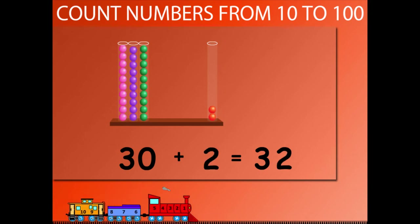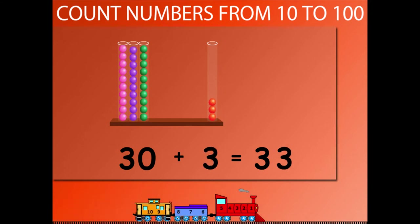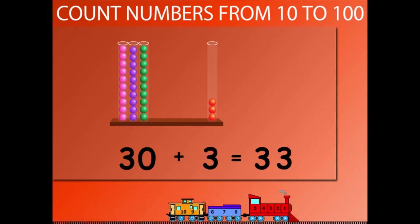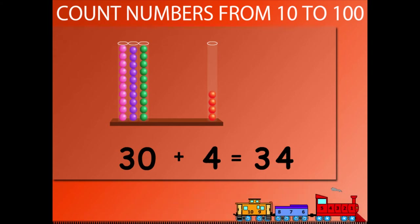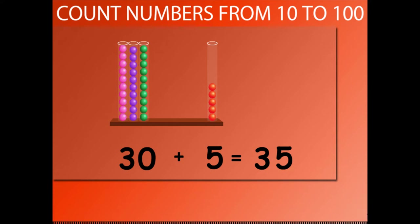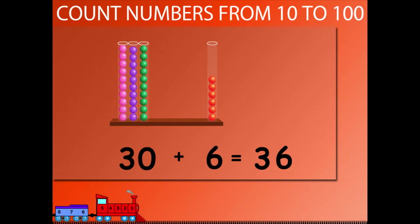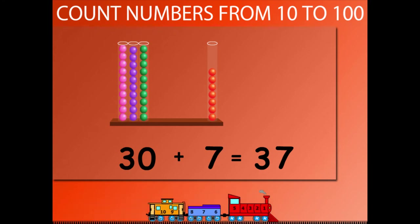30 plus 3 is equal to 33. 30 plus 4 is equal to 34. 30 plus 5 is equal to 35. 30 plus 6 is equal to 36. 30 plus 7 is equal to 37.